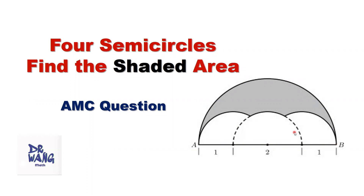We have three little semicircles with radius one. One center is here — this side is one, this side is one. And one center is here — this side is one, this side is one. The third center is here — this side is one, this side is one.